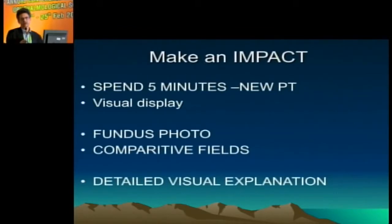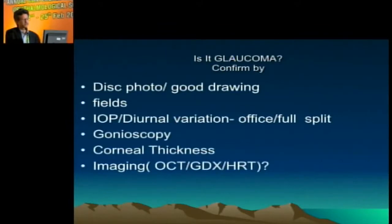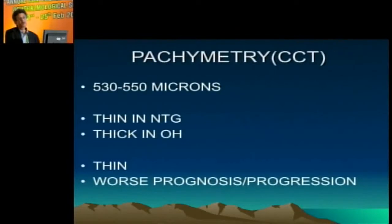Find out where the patient comes from, how many kids they have, what is going on at home, so you know whom you are treating. You have to give an explanation of what you are trying to do. You should have a disc photo and a visual field, even if you have to send the patient elsewhere. Do intraocular pressure three to four times in a day, not just once. Gonioscopy is a must. Corneal thickness should be done at least once, and imaging may also be required.